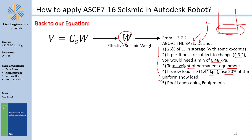For typical regular structures without storage systems, W is essentially the self-weight plus dead load. Engineers may also opt to include a portion of the live load based on engineering judgment.